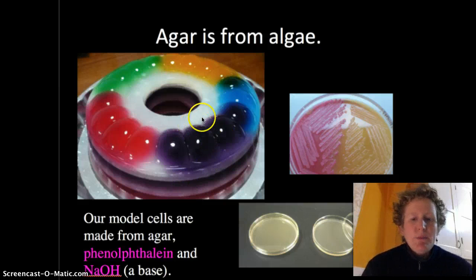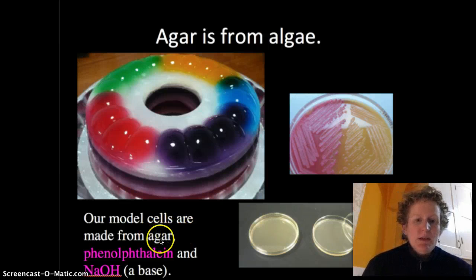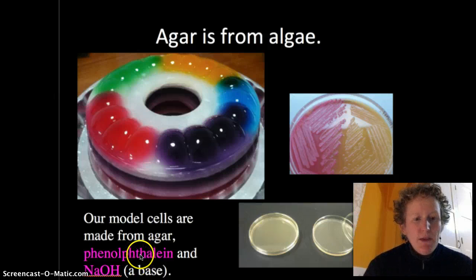Agar is derived from algae. It's also used to make cool-looking desserts and culture plates for bacteria. Our model cells are made from the same kind of agar. They contain phenolphthalein and a little bit of sodium hydroxide to make that phenolphthalein pink. Sodium hydroxide is a base.